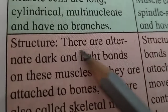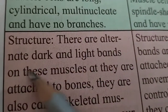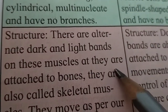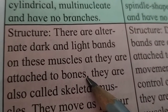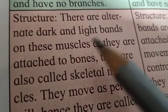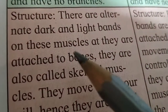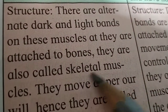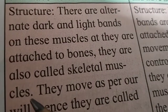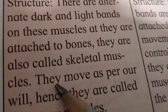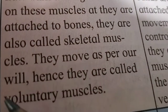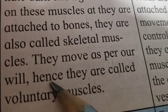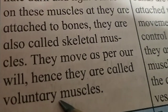In striated muscles, there are alternate dark and light bands on these muscle cells, and they are attached to the bone. Hence they are also called skeletal muscles. They move as per our will, so they are called voluntary muscles.